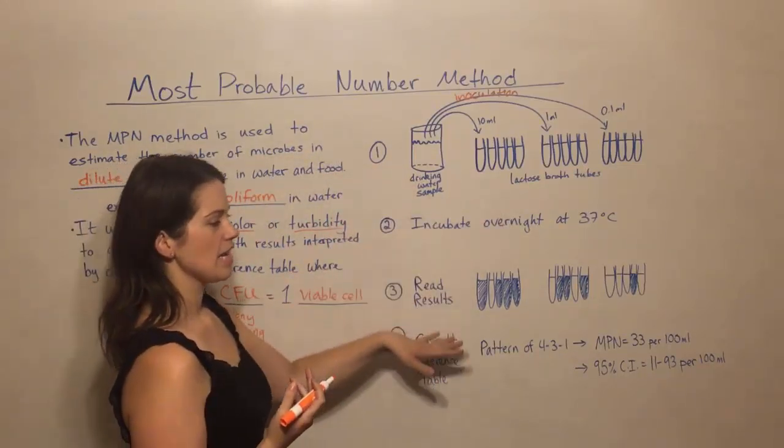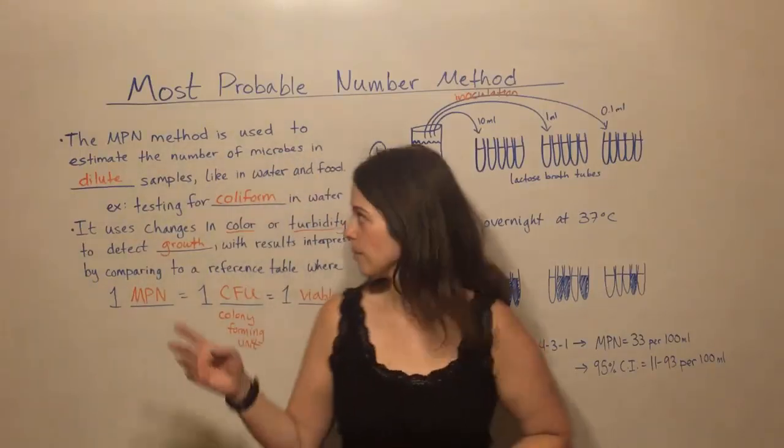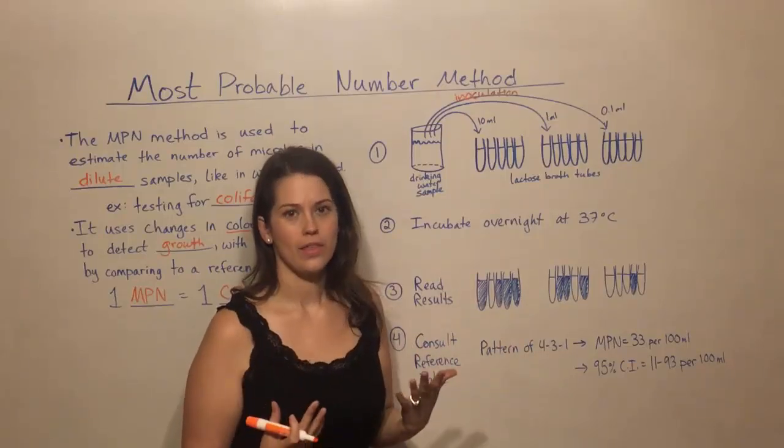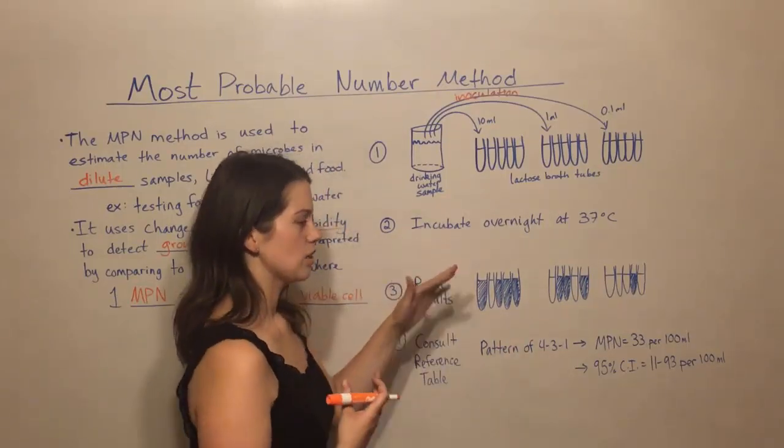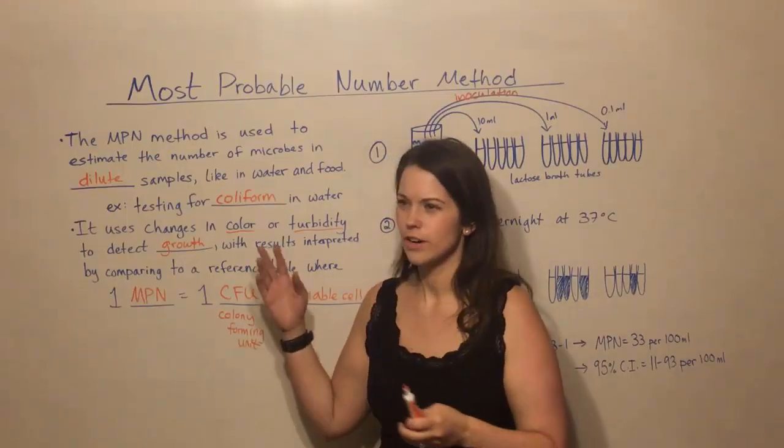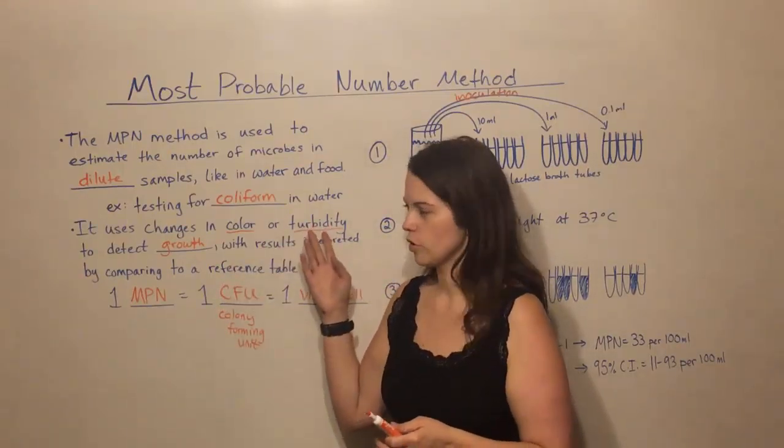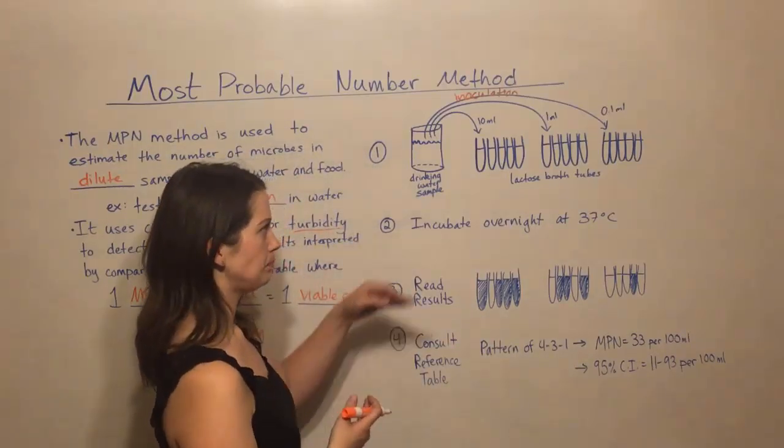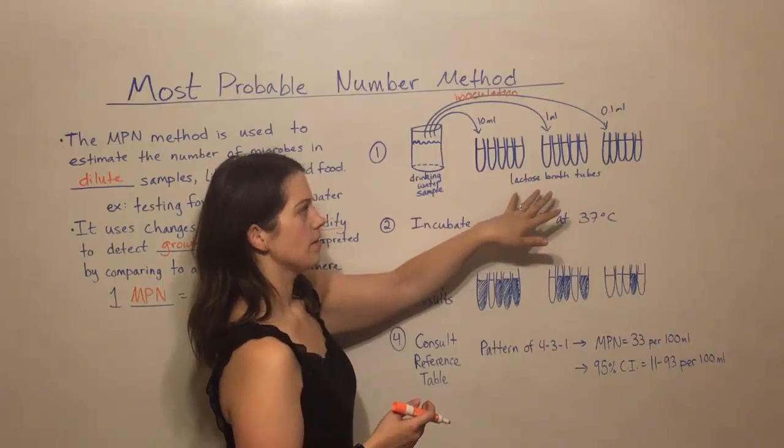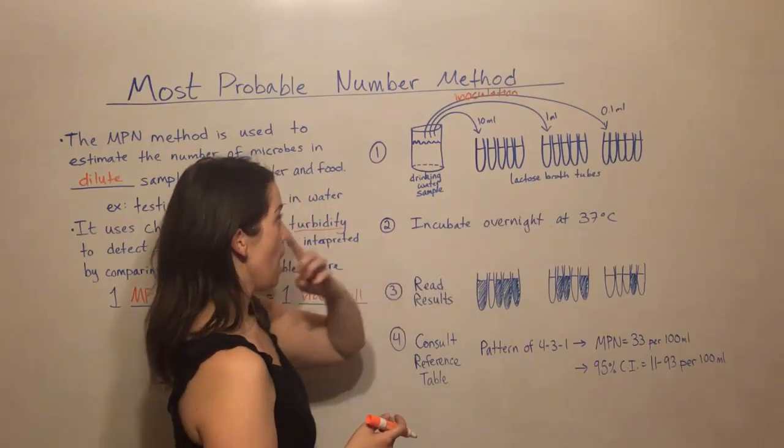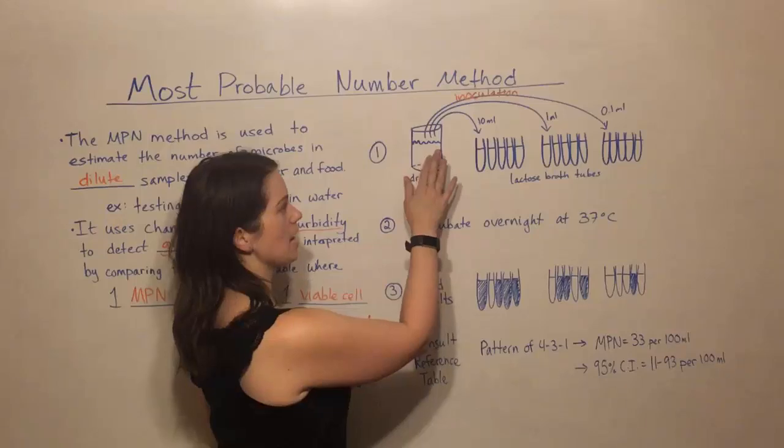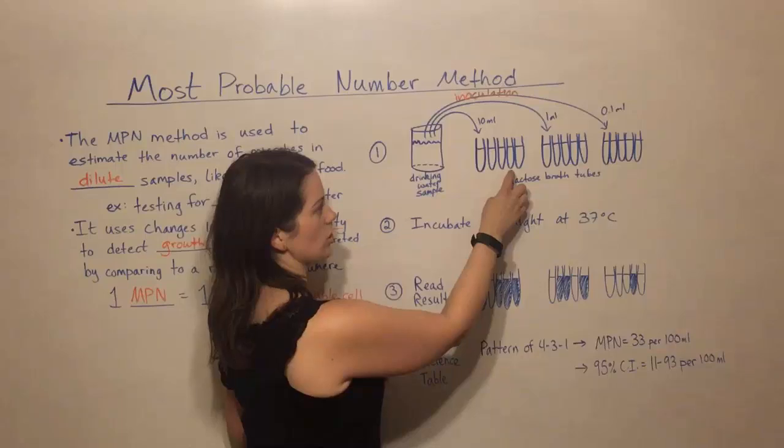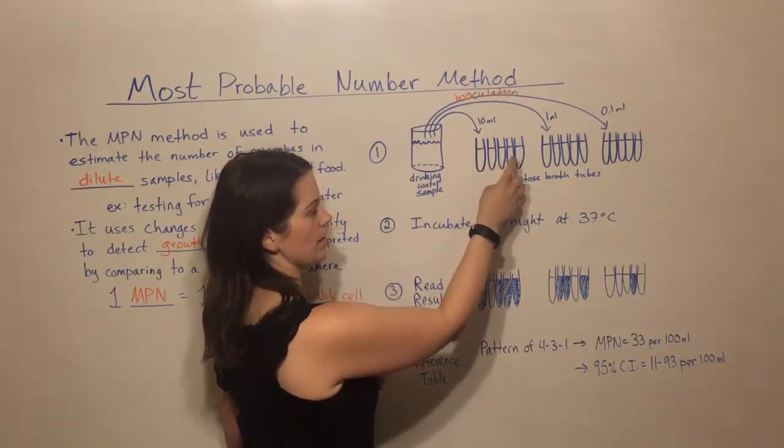And then we have three sets of five lactose broth tubes. Remember that in this example, we're looking for coliform bacteria and coliform bacteria can ferment lactose. You could do this method with other kinds of tests where you're looking for a different kind of color change or a different growth in turbidity and different kinds of broth, depending on the type of bacteria you're looking at. So here we have our three sets of five lactose broth tubes. What we do is we take 10 milliliters from the drinking water sample and inoculate each of these five tubes. So 10 milliliters added to each one.